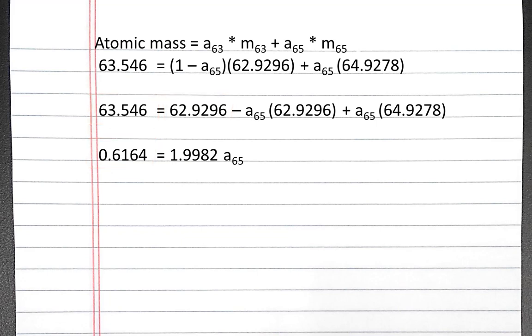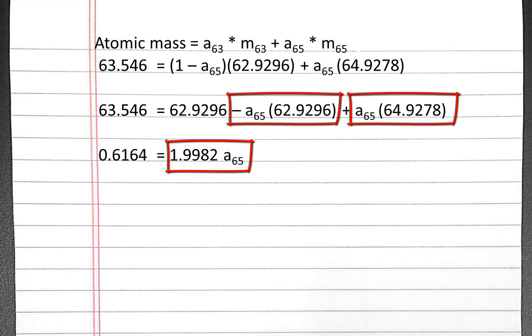On the right, we'll take 64.9278 times the abundance of 65, subtract 62.9296 times the abundance of 65, to get 1.9982 times the abundance of 65.